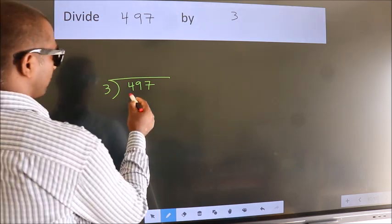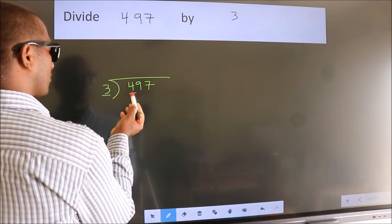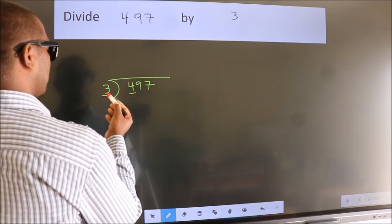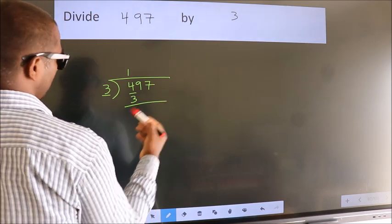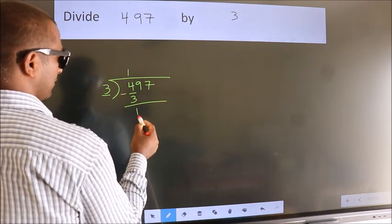Here we have 4. Here 3. A number close to 4 in 3 table is 3 once 3. Now we should subtract. We get 1.